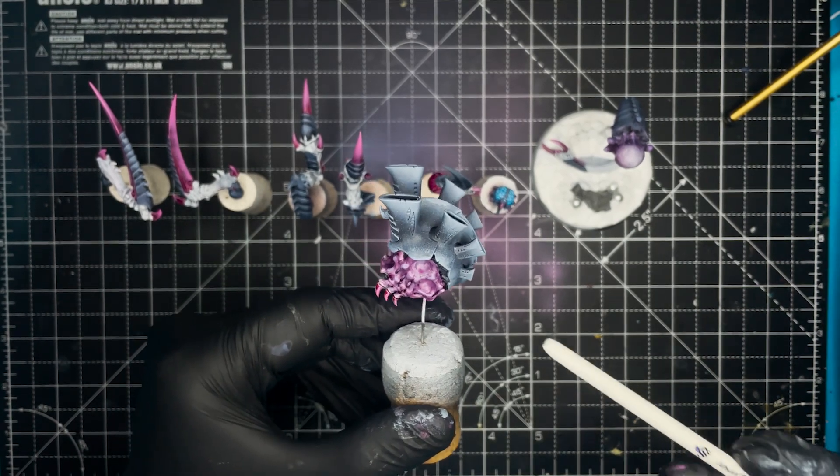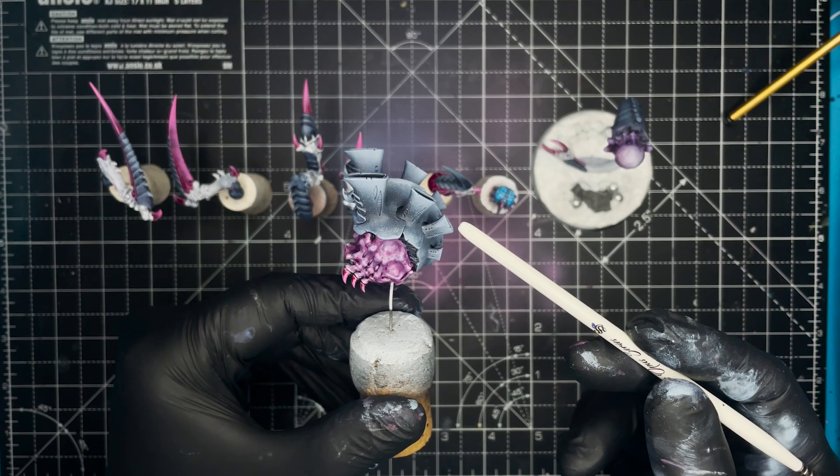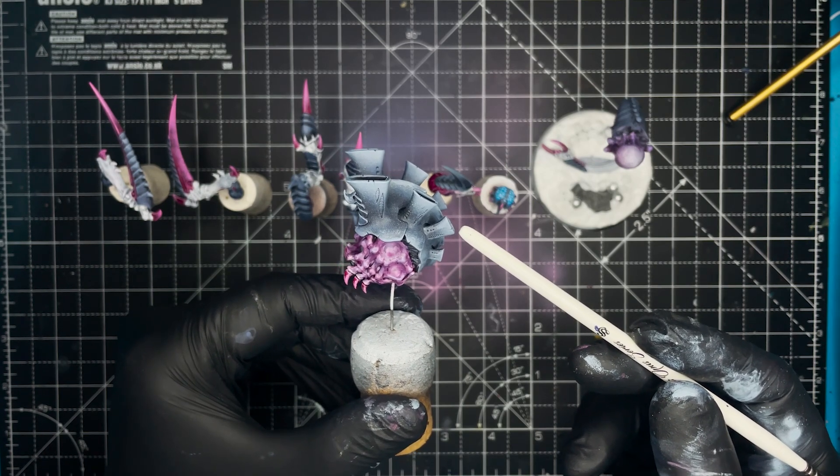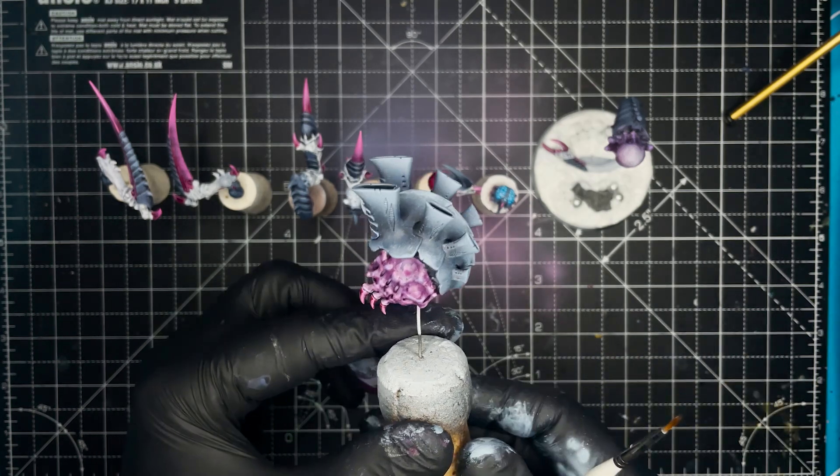So I started off from a white base coat and then painted in all of the armor parts in black and highlighted the armor up using The Fang and Fenrisian Grey.